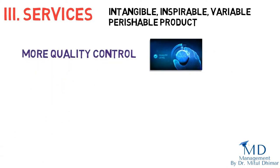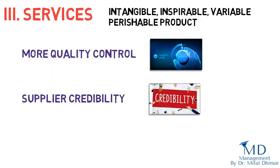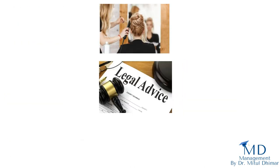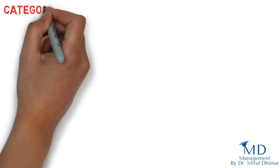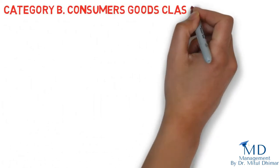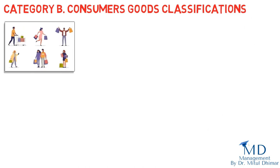Number three: services. A service is an intangible, inseparable, variable, and perishable product. As a result, they normally require more quality control, supplier credibility, and adaptability. For example, haircuts, legal advice, and appliance repairs.